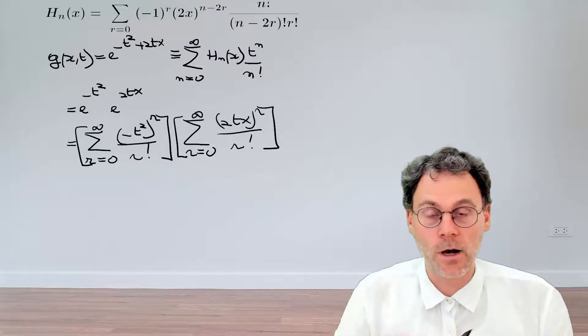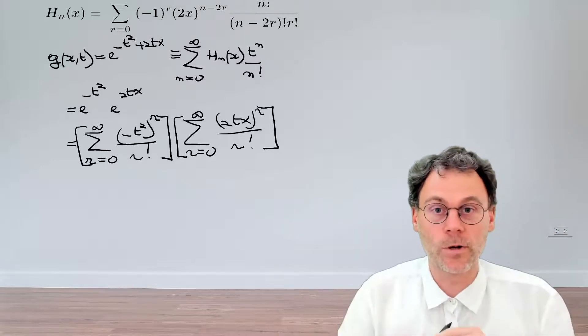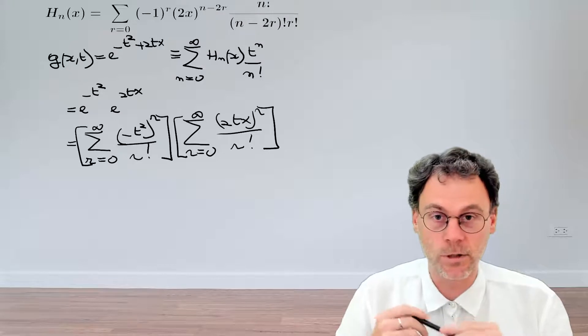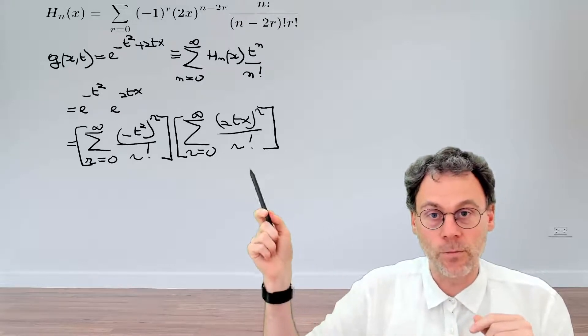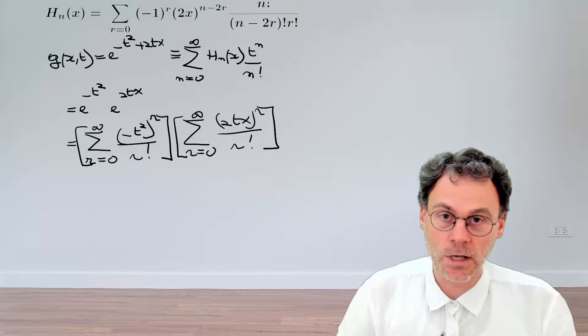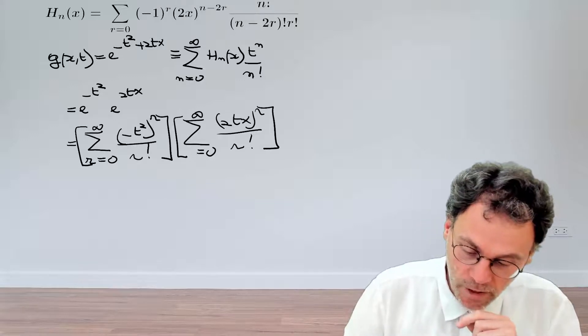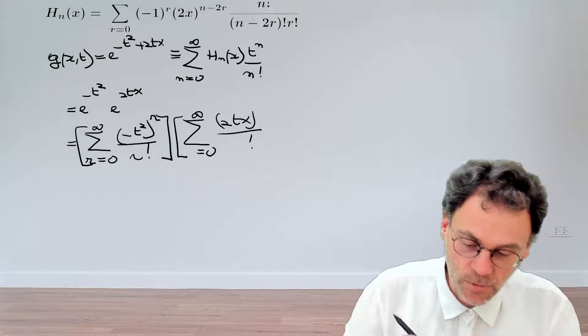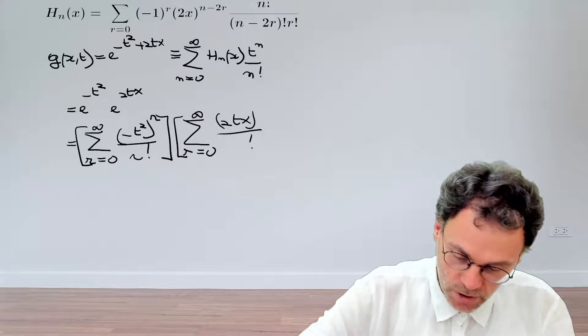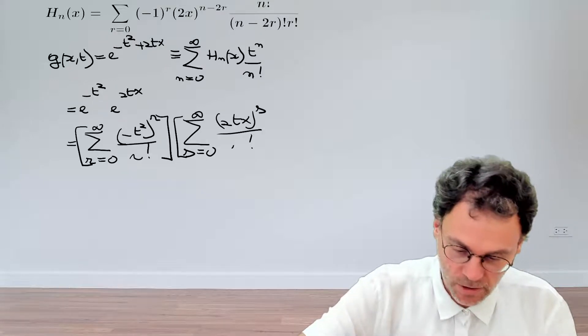So hopefully now I hear a huge uproar because what I've done here is of course a terrible mistake. You know that if we take a product of two series expansions, then we should really pay attention to the fact that we use a different summation index for the second factor, like so.